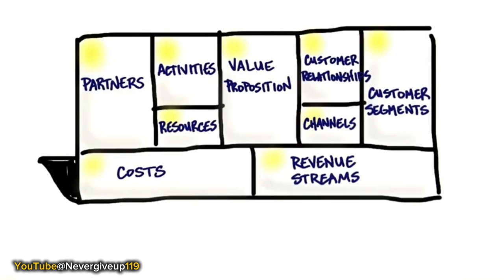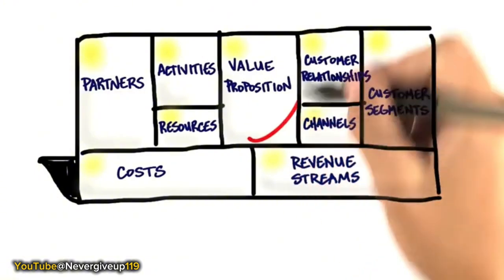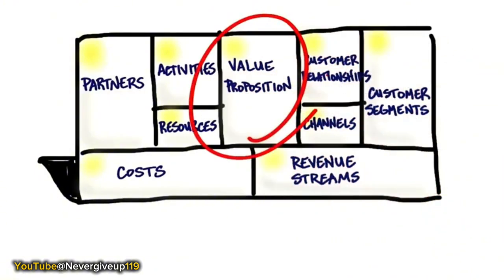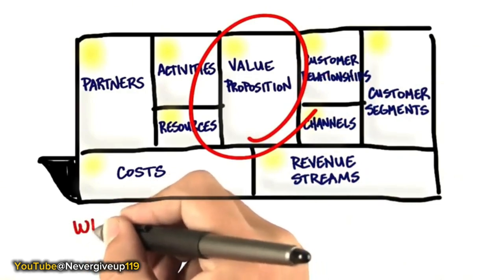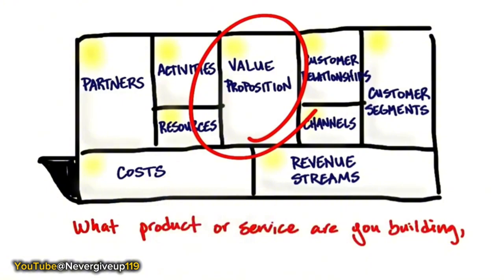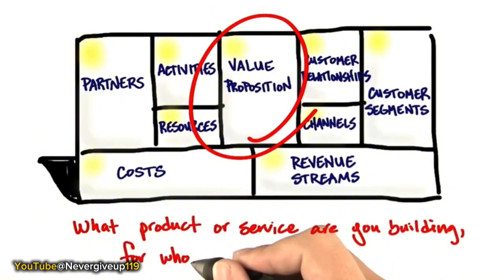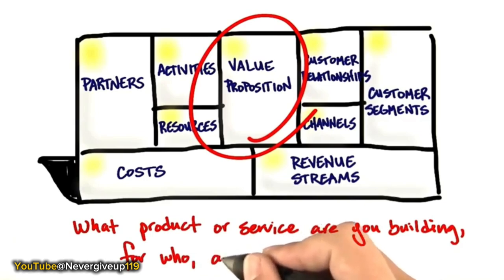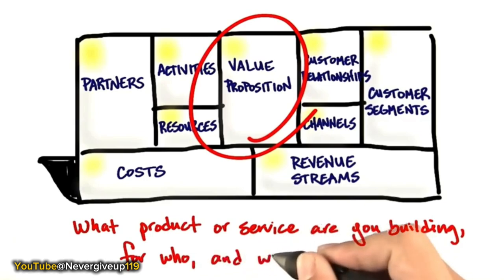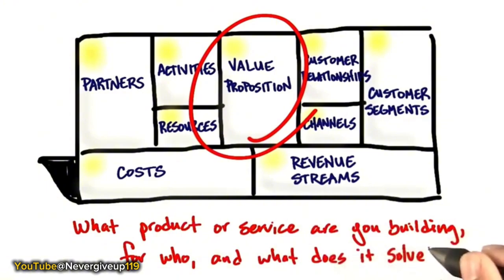You're all familiar with the business model canvas, and hopefully by now you've actually taken a shot and tried to fill out the canvas for your own idea and your own startup. Today we're going to talk about the first box — value proposition — which is just a fancy word in the business model canvas for what is it that you're building: what product or service are you building, and for who, and what exactly does it solve for those people?